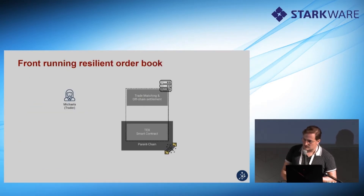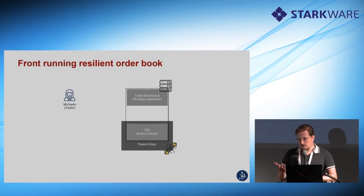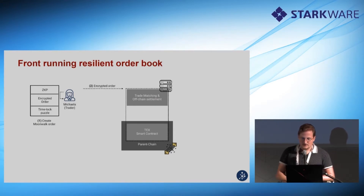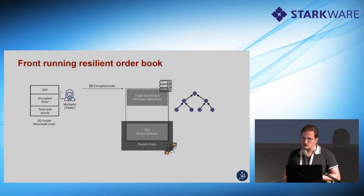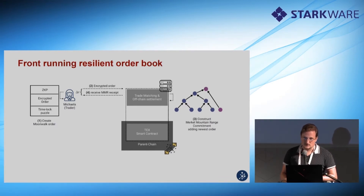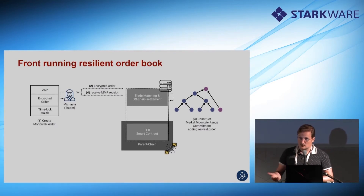The zero knowledge proof proves that the order is valid and that I'm allowed to spend or buy this amount of assets. The encrypted order is the order contents in encrypted form that the exchange can decrypt with the time lock puzzle. The time lock puzzle allows the exchange to decrypt an order after time T in case the trader doesn't reveal the appropriate key. In the protocol: Mikaela creates this moonwalk order with the ZKP, encrypted order, and time lock puzzle, and sends it to the exchange. The exchange has a Merkle Mountain Range of existing orders, appends this new order, and sends the commitment of this MMR back to Mikaela. Mikaela can then measure the round trip time it took for the exchange to respond.